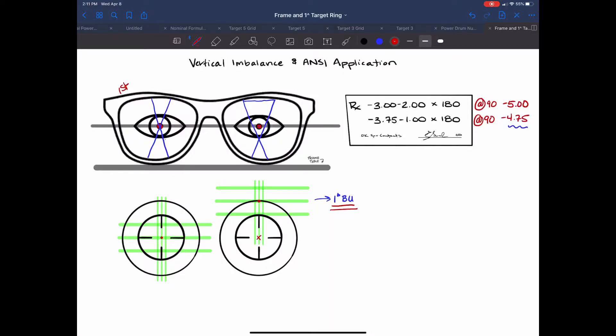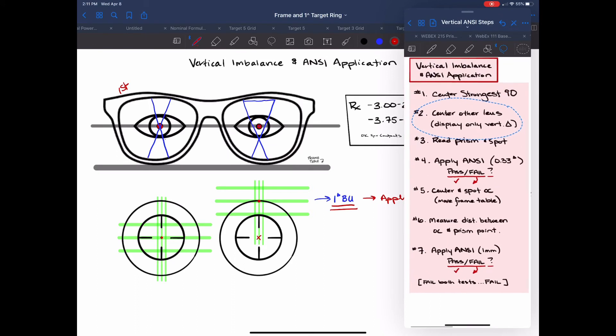So now once we know that we have one diopter base up prism we're going to apply that to ANSI and ANSI allows us how much? 0.33 diopters in any direction but I have one diopter base up prism that's going to fail. So that doesn't pass but we still have one more area of tolerance that ANSI allows us.